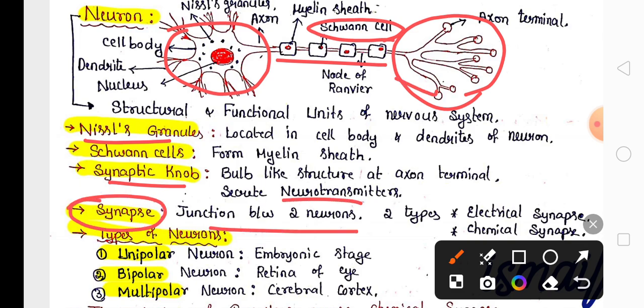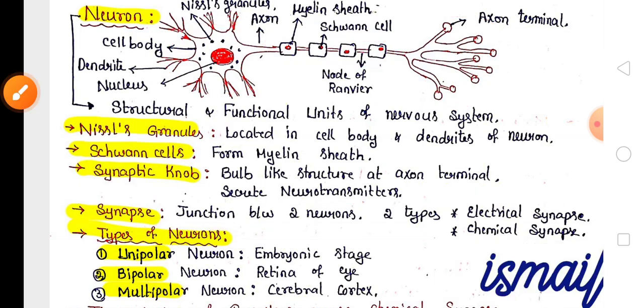Synapse is the gap between two neurons. There are two types of synapses: Electrical Synapse and Chemical Synapse. This is important for the exam.